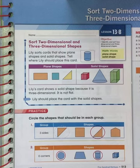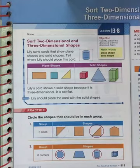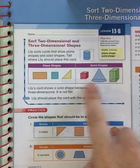Let's look at the top. Sort two-dimensional and three-dimensional shapes. Lily sorts cards that show plane shapes and solid shapes. Tell where Lily should place the card. She has a card showing a cylinder. Lily's card shows a solid shape because it is three-dimensional. It is not flat. Lily should place the card with the solid shapes.